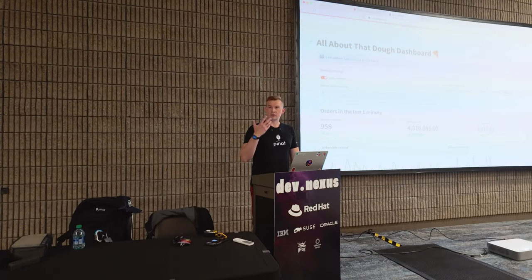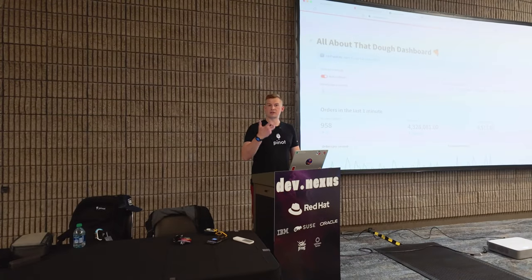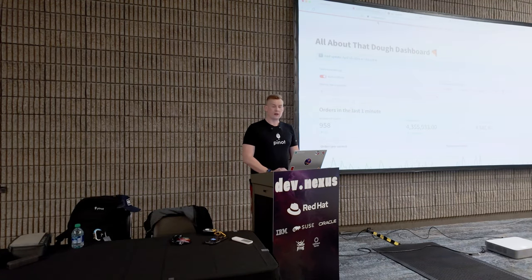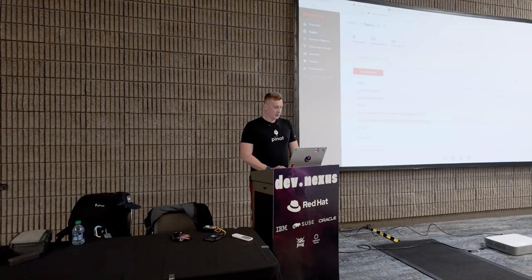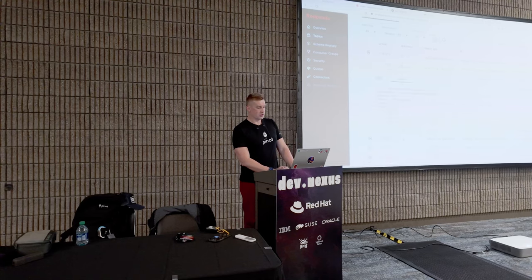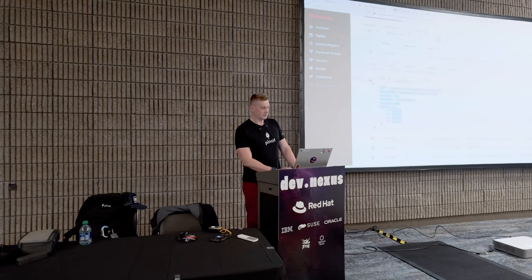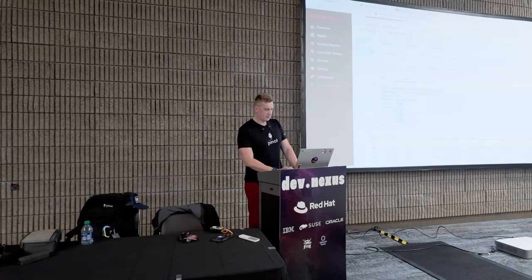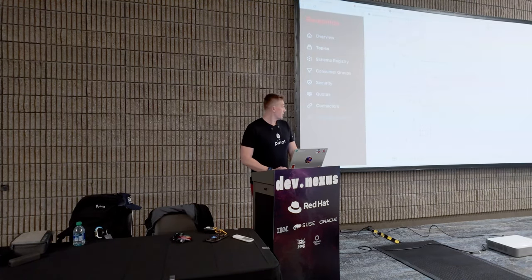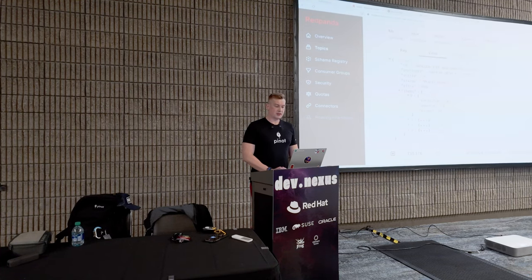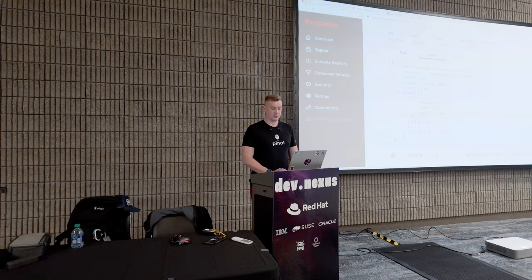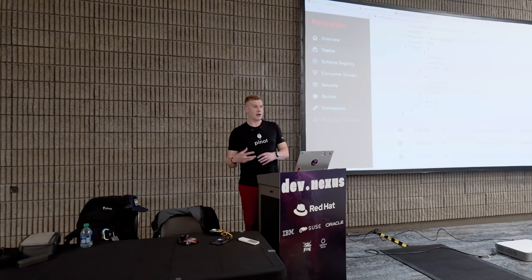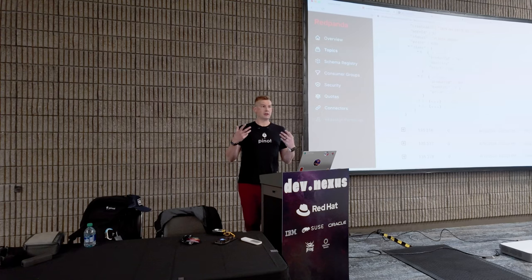In this system, we have elements of an event-driven system and real-time system. We have Kafka to generate all these orders. Every time someone places an order, that order lands into a Kafka topic. The order looks like this: we have an order ID, created timestamp, who created this order, what the status is, and a bunch of items inside the order with product IDs. But there's no information about the product — that's why we need to enrich the stream.